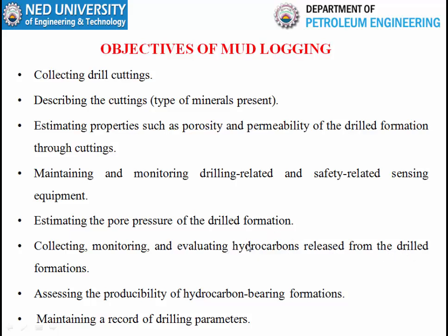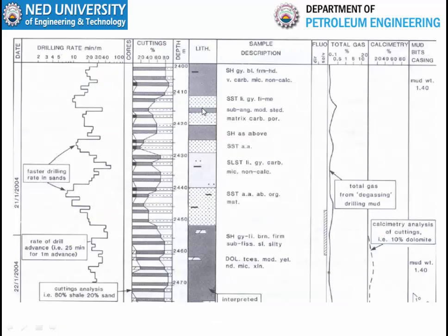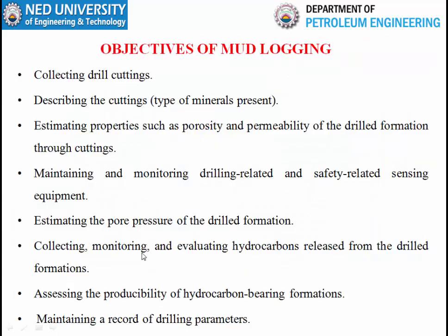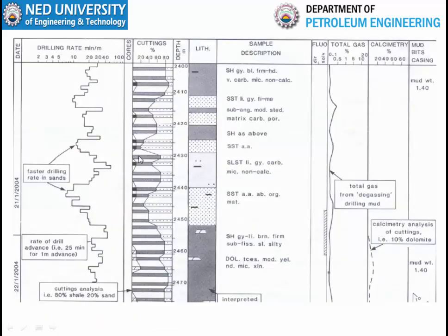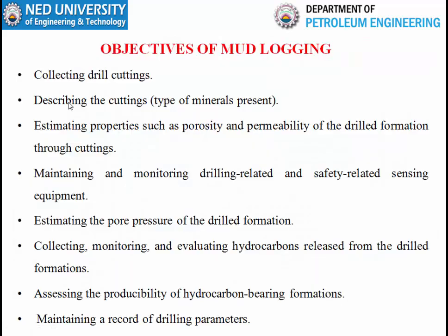If oil is present, the cuttings are examined to identify oil, helping assess producibility of the hydrocarbon-bearing formation. Through the drilling rate, they also examine whether a porous or tight formation has been drilled — if drilling rate increases sharply, it indicates a porous formation, and if the drilling rate is very slow, it indicates a tight or low-porosity formation. Through drilling activities, they also measure information about the formation that has been drilled.